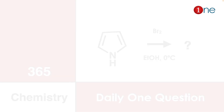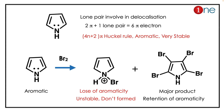The answer lies in aromaticity. Pyrrole is aromatic because the lone pair on nitrogen is involved in delocalization — it has two pi bonds and one lone pair, so totally six pi electrons. According to Hückel's rule, it is a 4n+2 system, aromatic and very stable. So the lone pair must remain involved in delocalization.